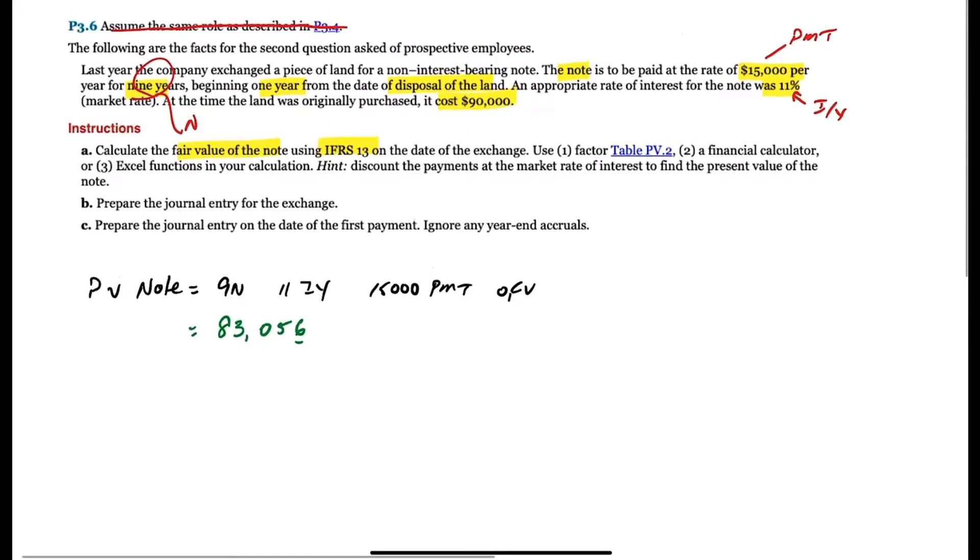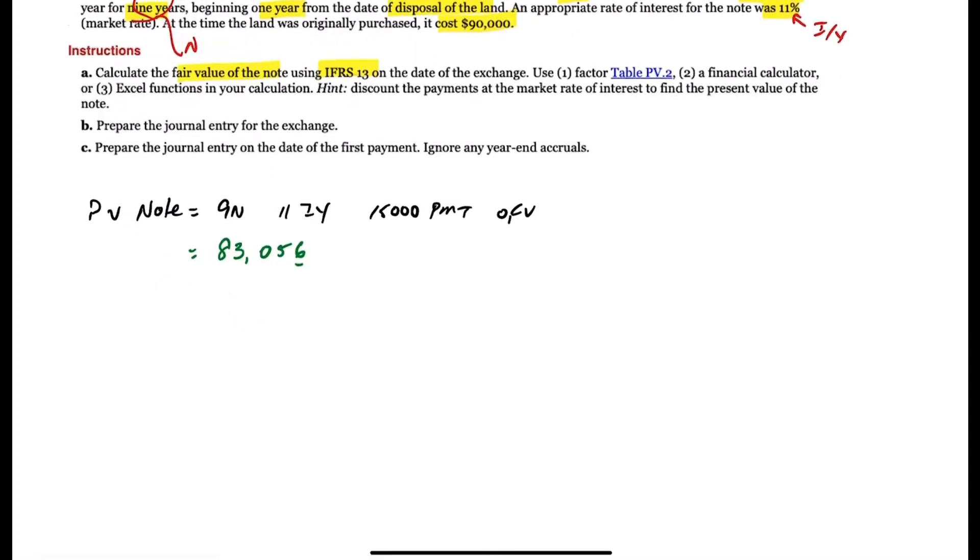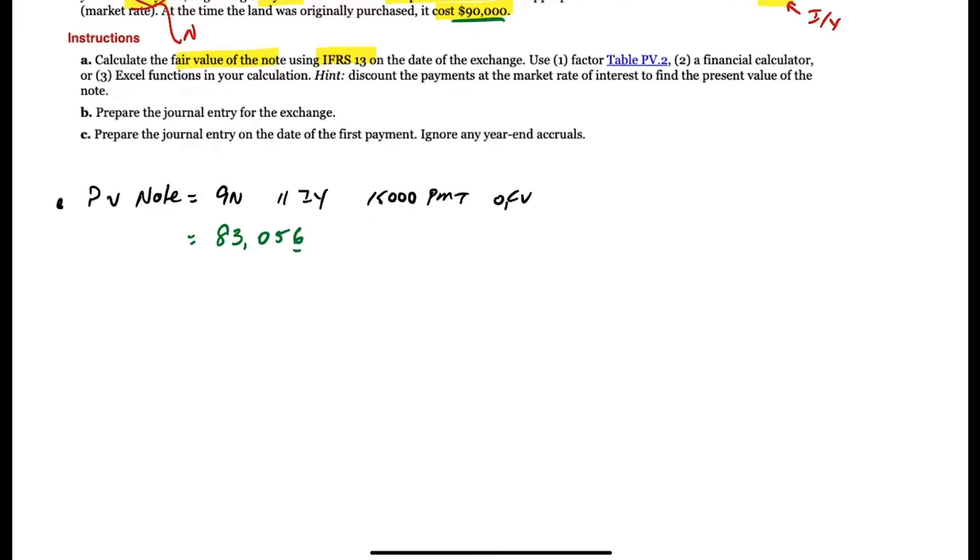To reiterate what's going on here, the company has a piece of land and they're basically selling it, but instead of getting it for cash, they're selling it in exchange for a note, an interest bearing note. So using the PV, this is saying the present value of the land is $83,000, but the original cost on the land was $90,000. This is part A.